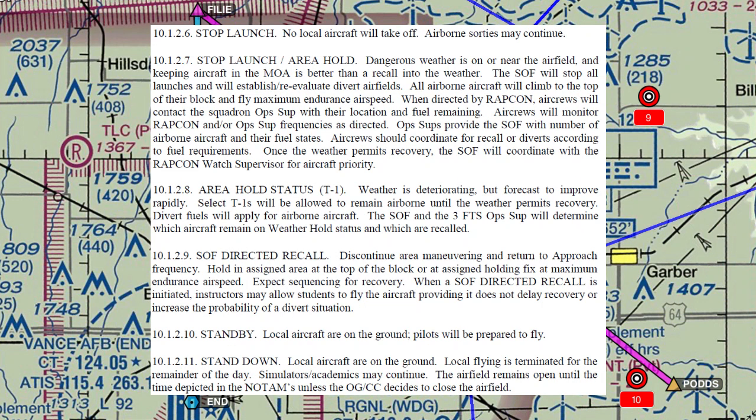Standby and stand down are the last two statuses to discuss. Standby means the status is not yet determined due to marginal weather conditions or while waiting for a pilot report from a weather ship. Stand down means flight operations are ceased for the remainder of the day.